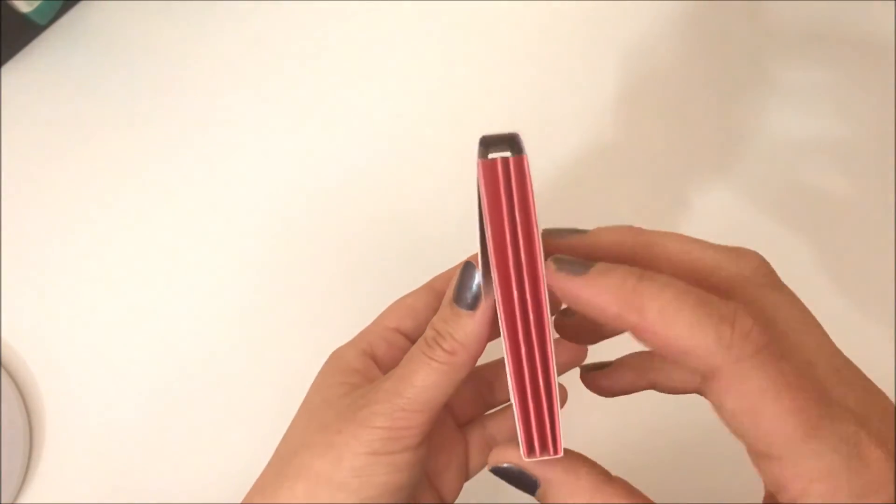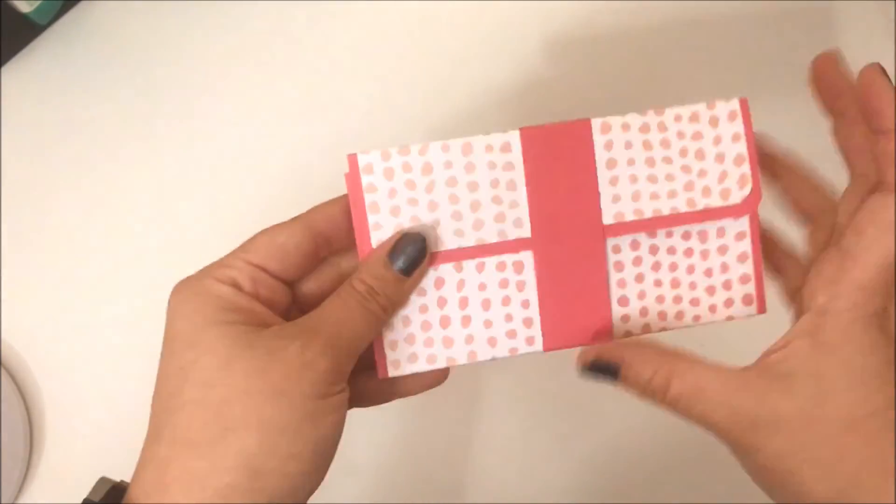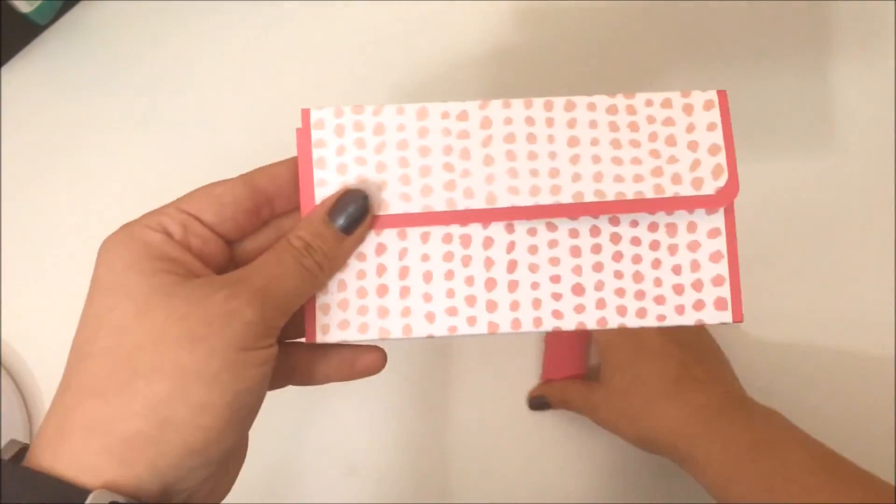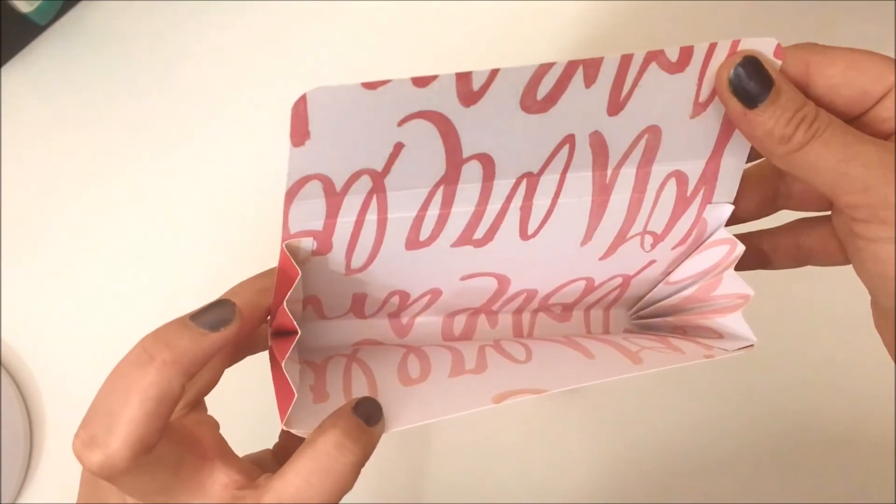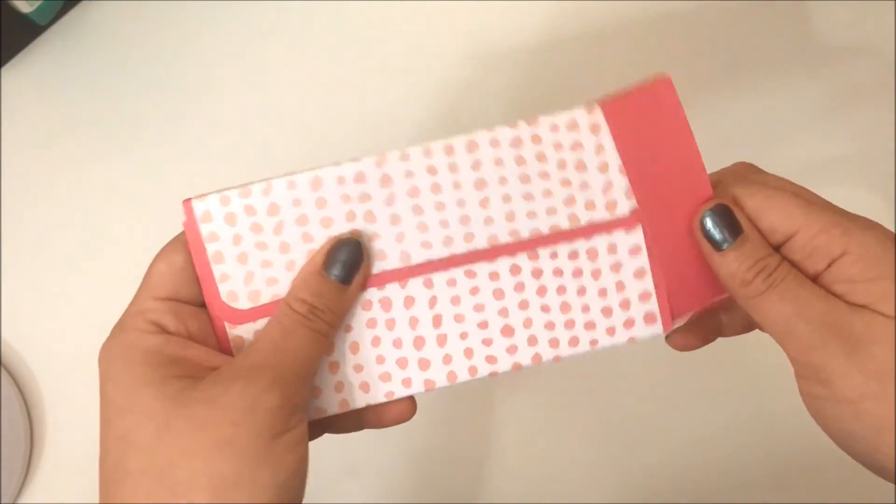That is the belly band there. That's the wallet all closed, and you can see that's the finished product. I'm just showing you some close-ups here so you can see the sides and the back. Then it opens up and you can fit lots of different goodies inside.